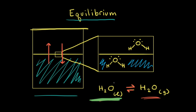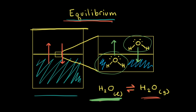But eventually we reach a point where the rate of vaporization is equal to the rate of condensation. When that happens, if you're turning liquid water into gaseous water at the same rate you're turning gaseous water back into liquid water, the number of water molecules in the liquid and gaseous state would remain constant. So when the rate of vaporization equals the rate of condensation, we've reached a state of equilibrium.